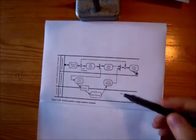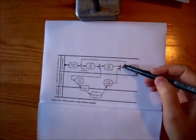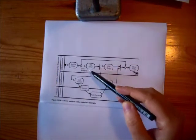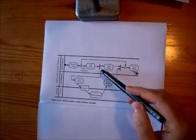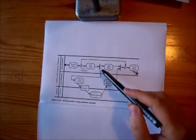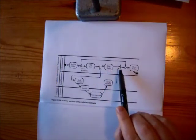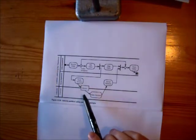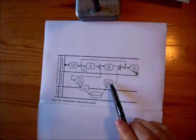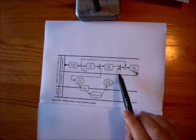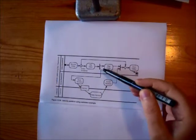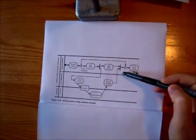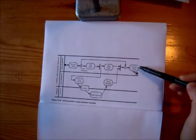Note the use of a fork here and a corresponding join here. After the order has been filled, two collections of things have to happen in parallel. The order has to be shipped and an invoice has to be sent, payment has to be made, and payment has to be accepted. Only after both of those things have been done do we go through this join bar here and close the order.